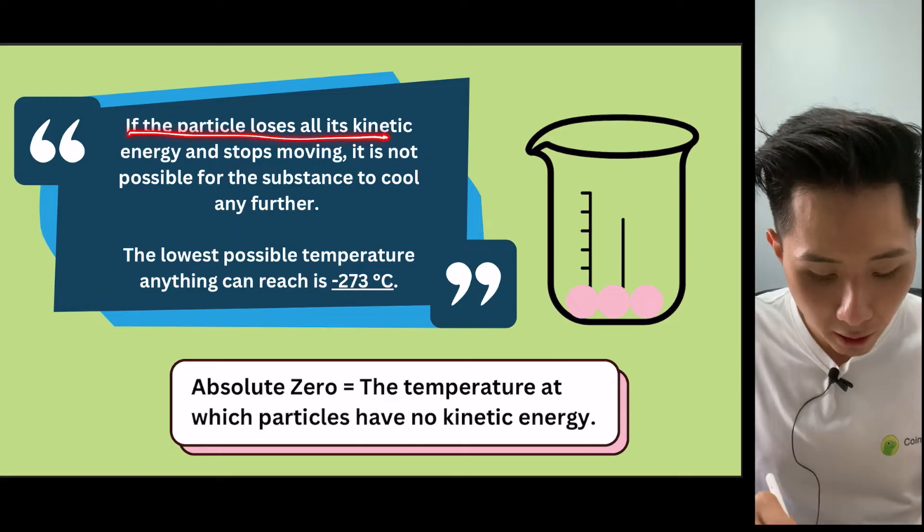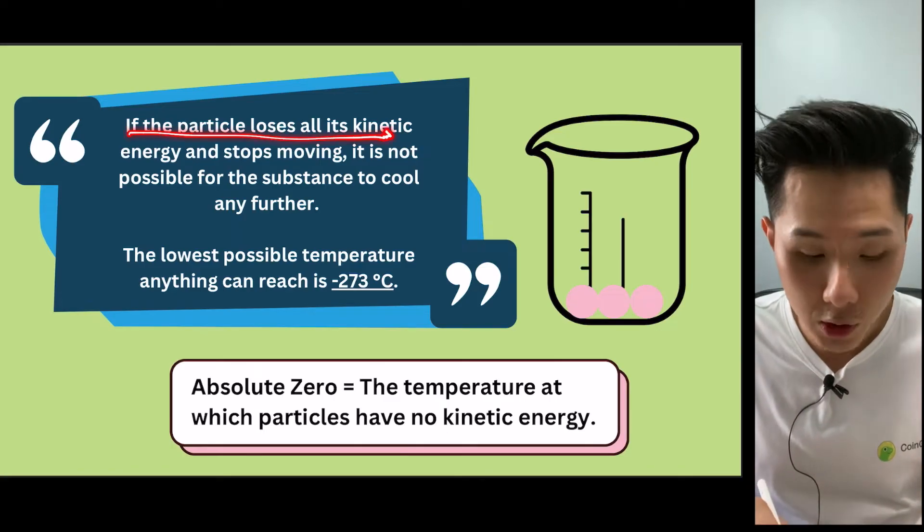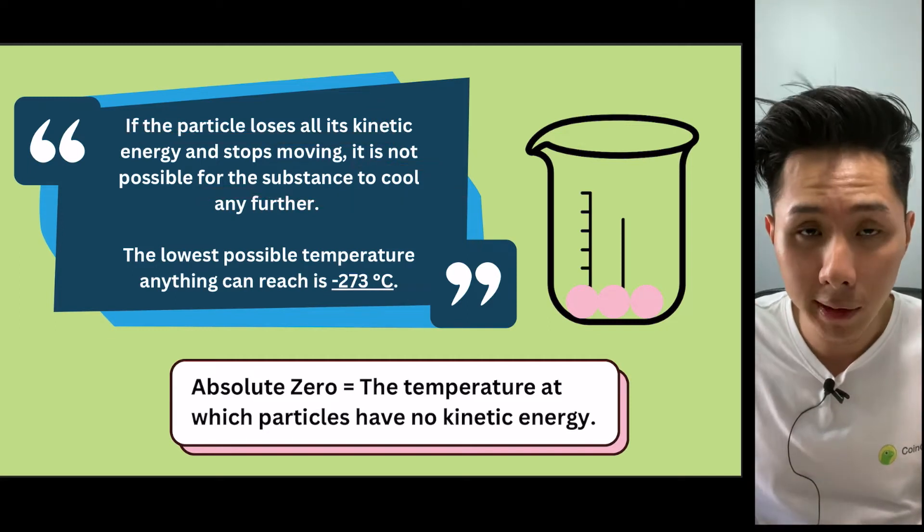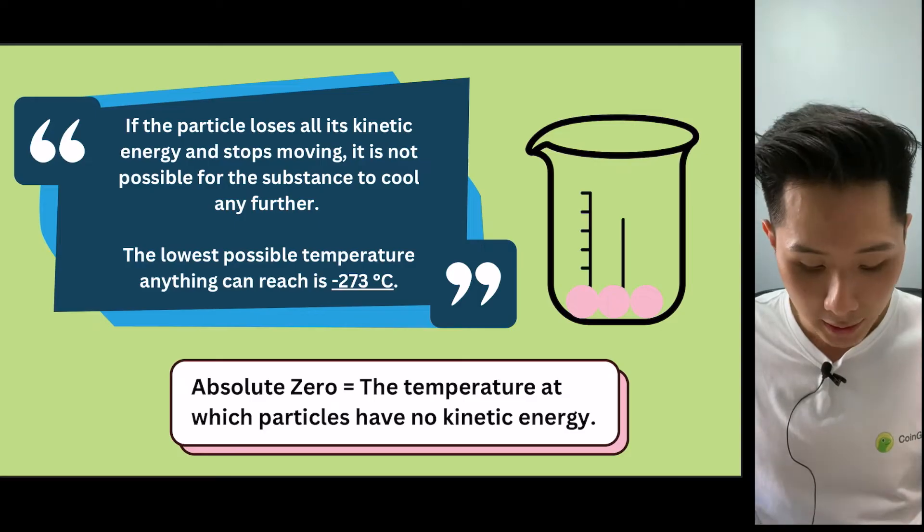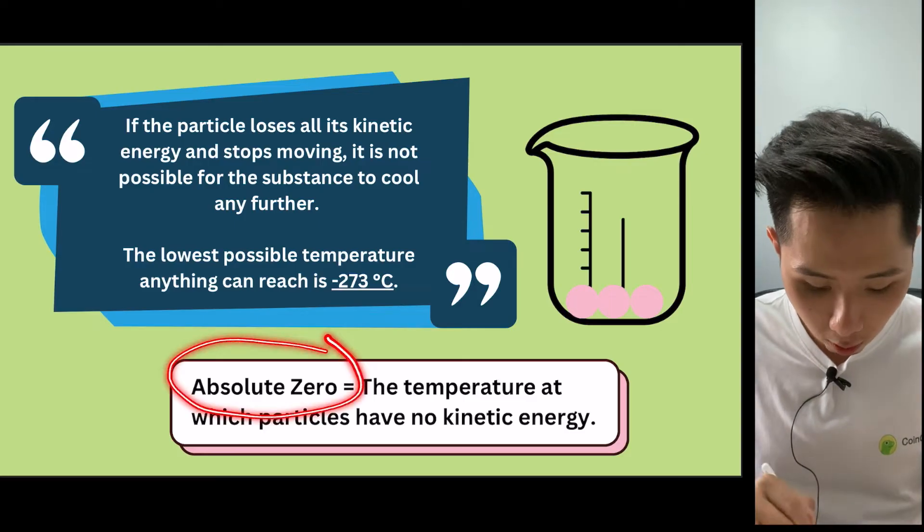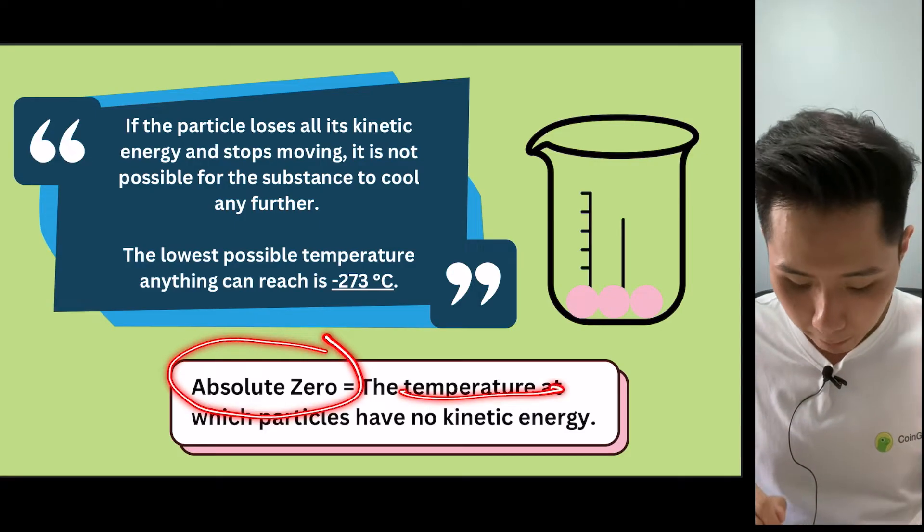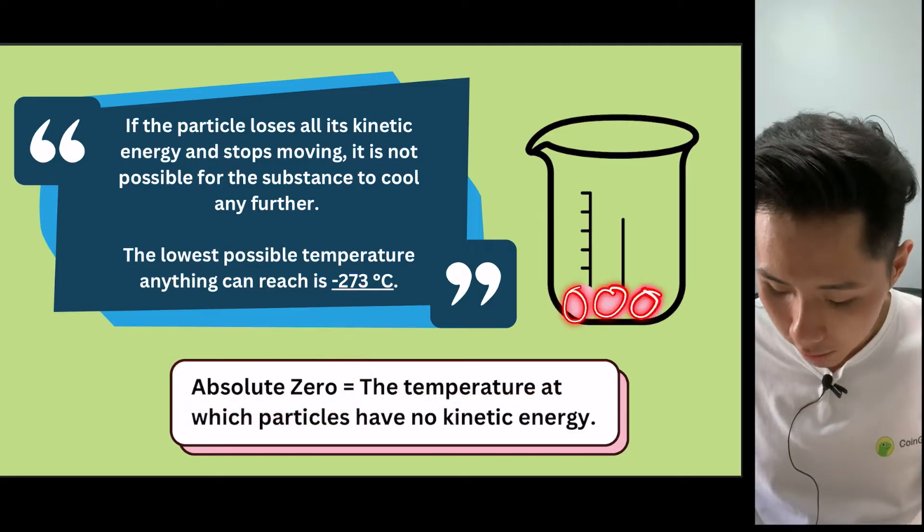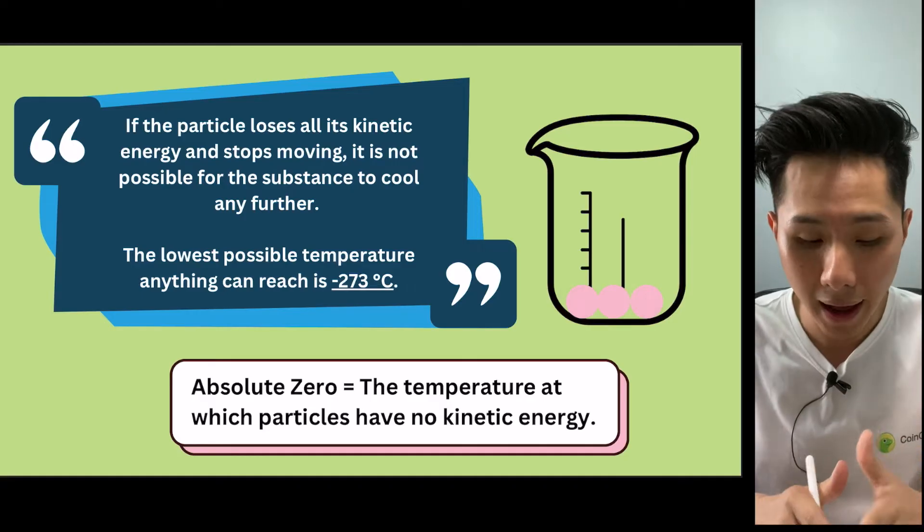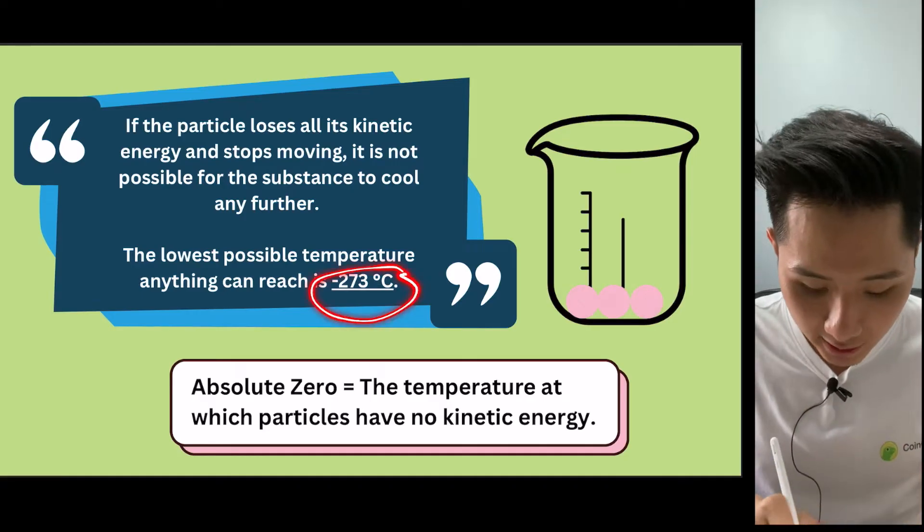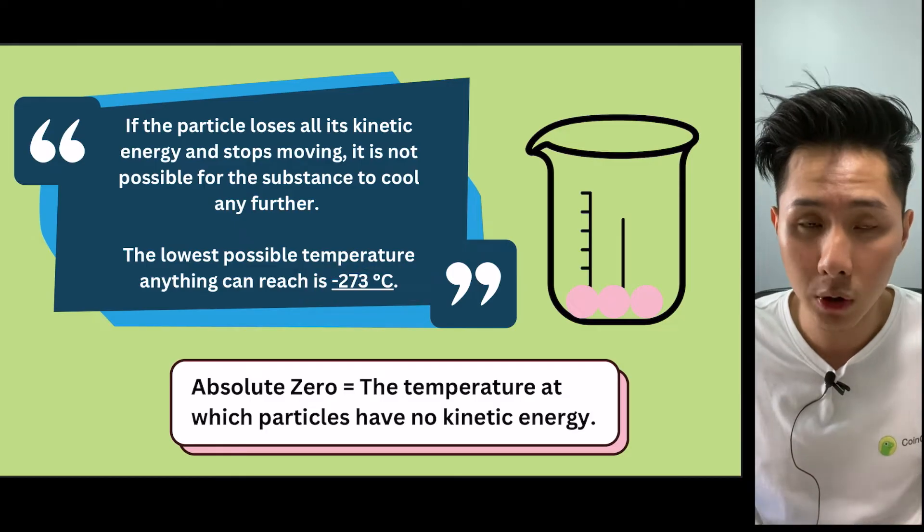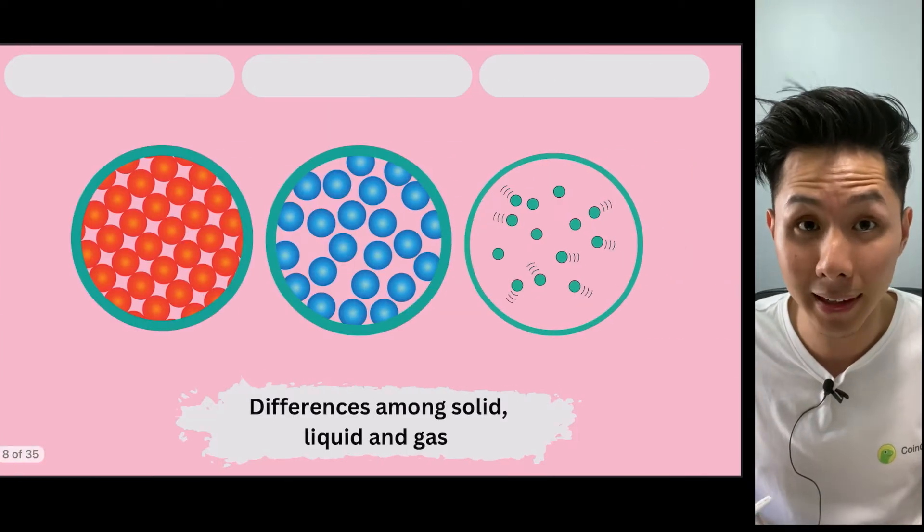So if particles lose all its kinetic energy, that means all the particles stop moving. It is not then possible for the substance to go cooler. And that is what we call absolute zero. It is the temperature at which particles have no kinetic energy. They are not moving at all. And this temperature is exactly negative 273 degrees Celsius, which is also zero Kelvin, as we'll look into later.